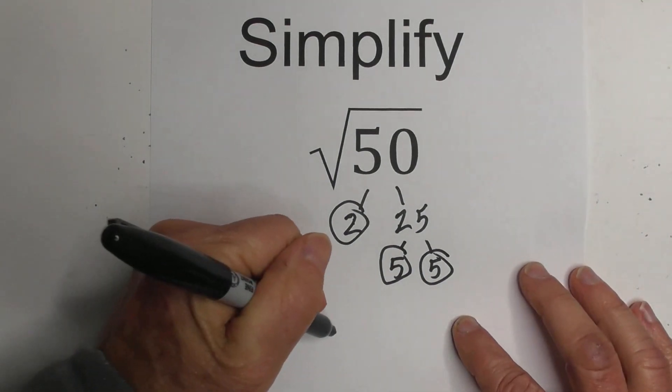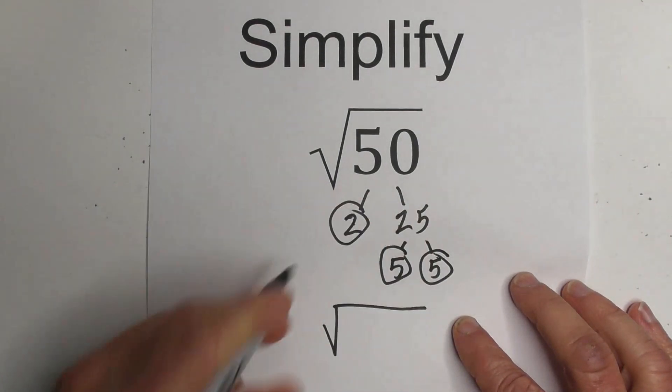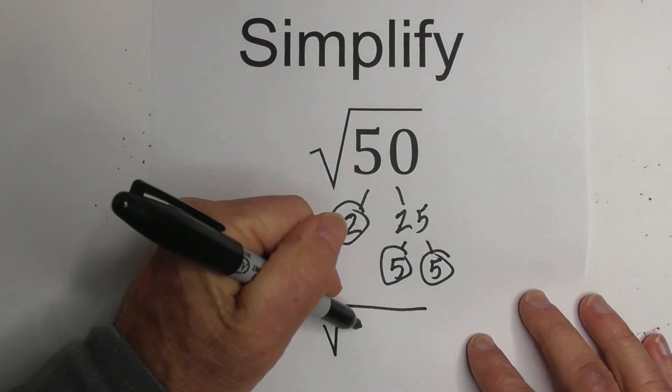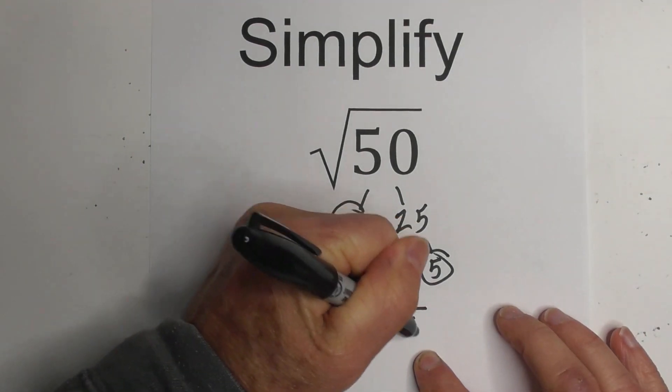So I'm going to rewrite this underneath the square root sign. So I've got 2 and 5 and 5.